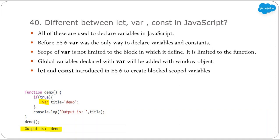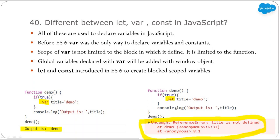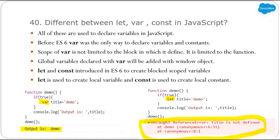That's why let and const were introduced in ES6 — to avoid these scope-related issues, because let and const are limited to the current block where they are declared. In the example with let, if we try to access the variable outside the block, we get an undefined error. And if we declare a global variable with let, it will not be added to the window object. So we can say let is used to create local variables and const is used to create local constants.